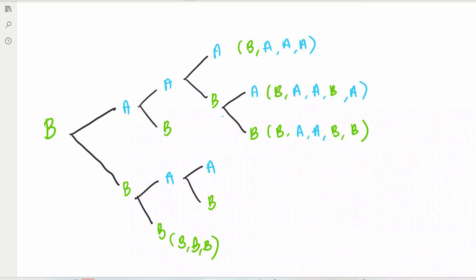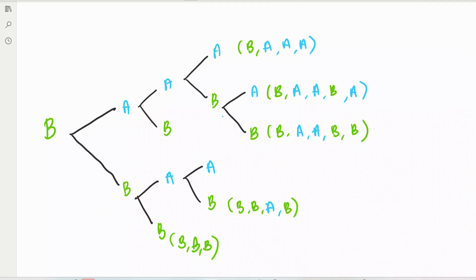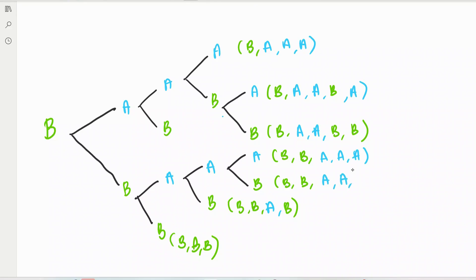For the branch where we need another set: B, B, A, A — two each, fifth set needed: A or B wins. Branch B, B, A, B — three for Basri, stop. Branch B, B, A, A, A — Ali wins. B, B, A, A, B — Basri wins. And then B, B, B — three for Basri straight, stop immediately. Also B, B, A, B — Basri already has three, stop.